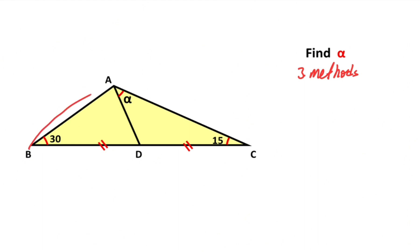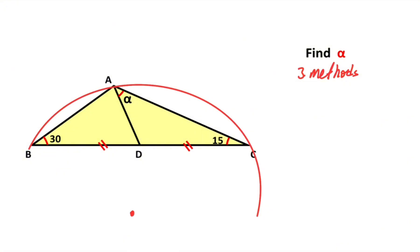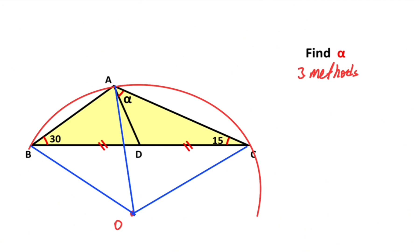So if we draw the circumcircle of this triangle, the center of the circle will be outside the triangle. Let's draw the circumcircle of the triangle and call the center point O. If we connect the center with the corners of the triangle, these blue lines are radii.